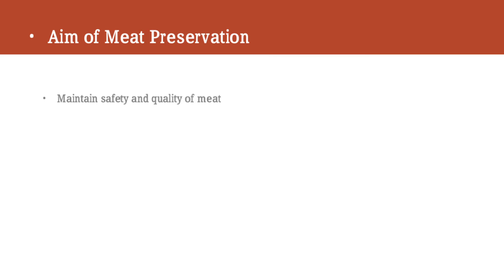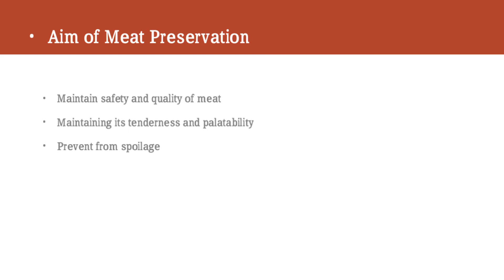The aims of meat preservation are: number one, to maintain the safety and quality of the meat for a prolonged period of time; to maintain its tenderness and palatability which attracts consumers and prevents spoilage; and lastly, to enhance the shelf life of the meat.